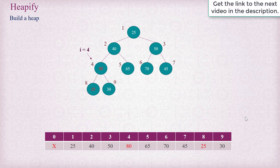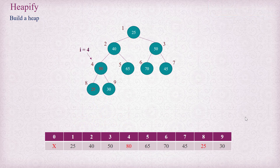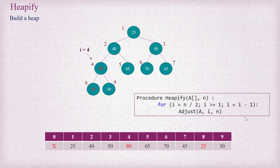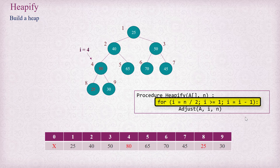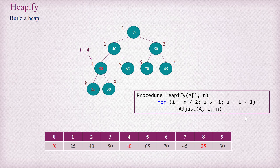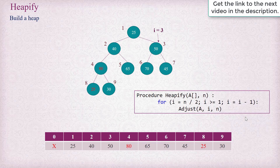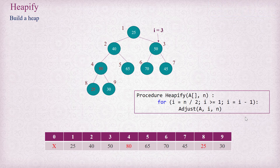Now we have a max heap maintained at index 4. The heapify operation starts adjusting the nodes so that each of them is a heap, starting from index n divided by 2 up to index 1. Heapify executes a loop starting from i equals n by 2 and goes up to 1, reducing i by 1 on each iteration and calling the adjust operation for index i. So for i equals 4, it adjusted the heap at index 4. Then we reduce i by 1 and go to index 3. The left child is index 6 and the right child is index 7, and they are both max heaps. So we call adjust and index 3 is adjusted as a max heap.